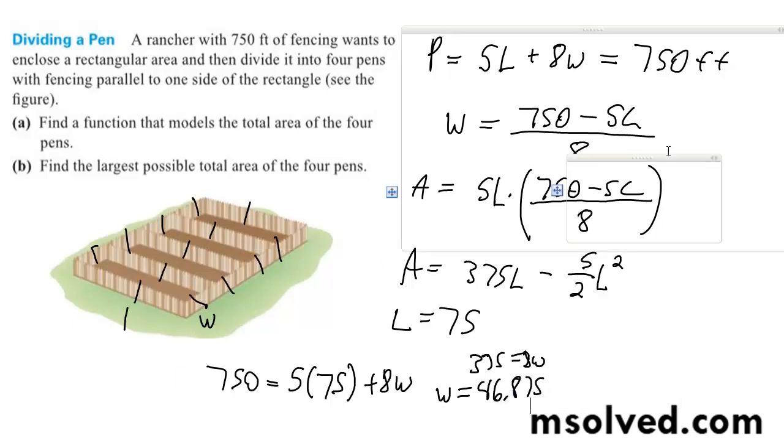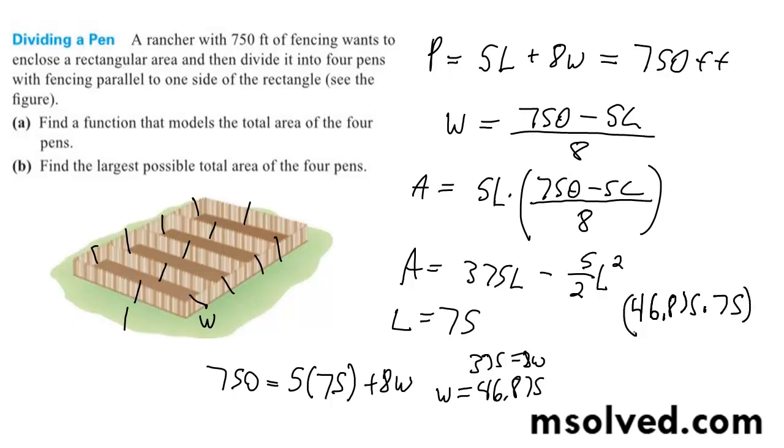The maximum area is going to be the width, which is 46.875, times the length, which is 75, and you got four of these because this is just one pen. The total area is going to be equal to 14,062.5 square feet. That's it.